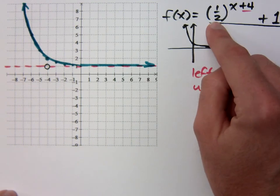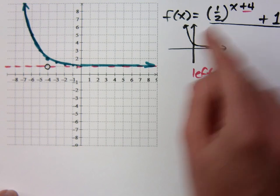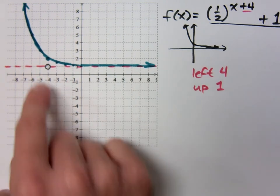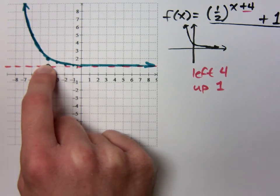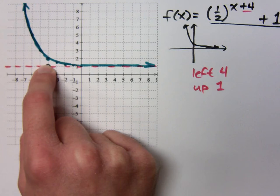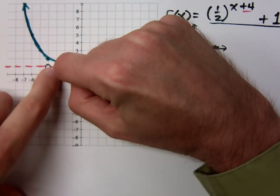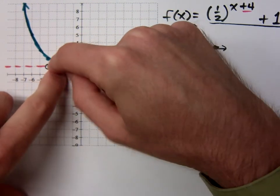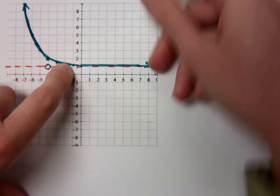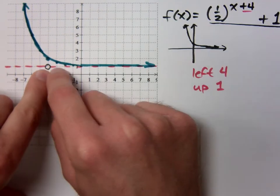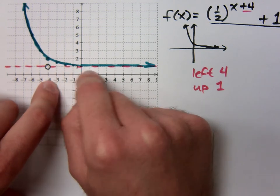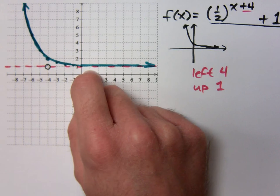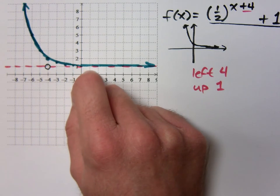If this base had been like a 10, every step to the right would multiply times 10. And we always start right here — we've got the 0, 1, because that's the easiest point to grab onto. If I went one step to the right, it would be up 10 units from the horizontal asymptote, and then up 100, and so on. Since it's 1 half, as I go to the right it's up 1 half, then 1 fourth, and so on. Because to the left, you'd be dividing by 1 half, which is really multiplying by 2.